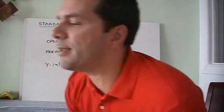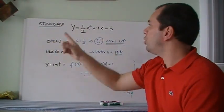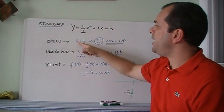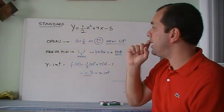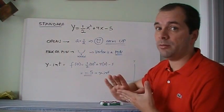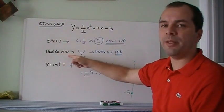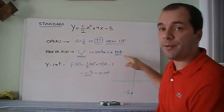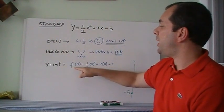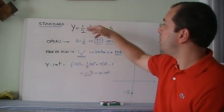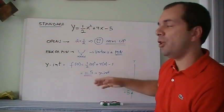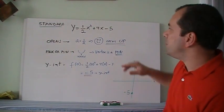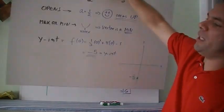Let's look at a standard form example: ½x² + 4x − 5. Right away: 'a' equals ½, it's positive so it opens up, and since it's a half it's also a compression. Since it opens up, the vertex is at the bottom, meaning it's a minimum. The y-intercept is found by plugging in x = 0, leaving just −5. Without more work, all we know is it opens up with a y-intercept of −5.